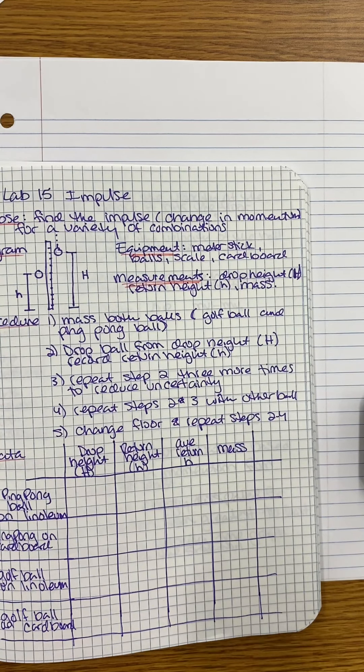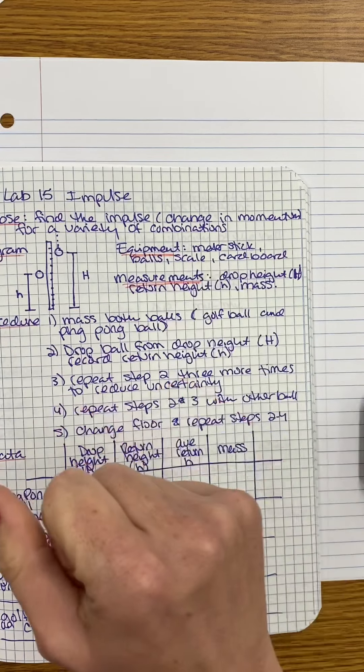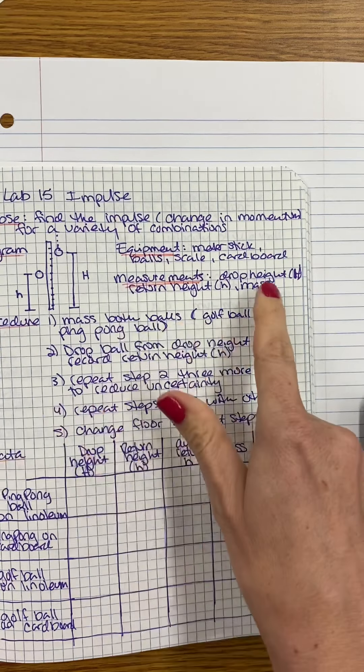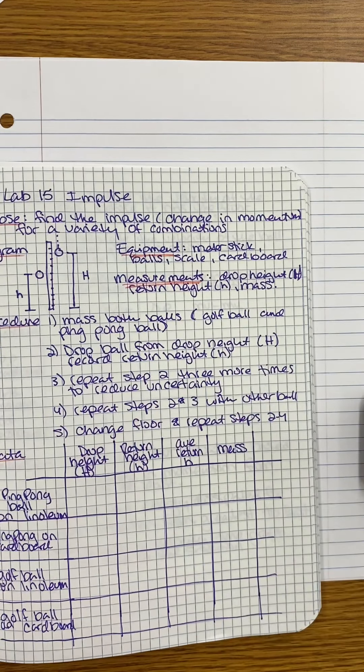Just like in the video, we discussed the meter stick, ball scale, and cardboard as our equipment. Things we are measuring are the drop height, return height, and the mass.